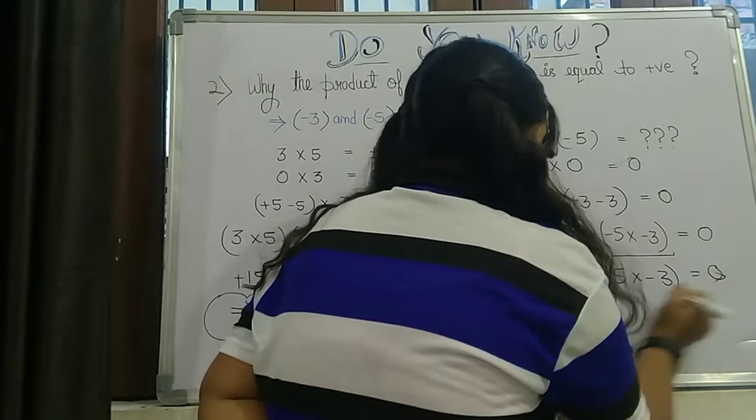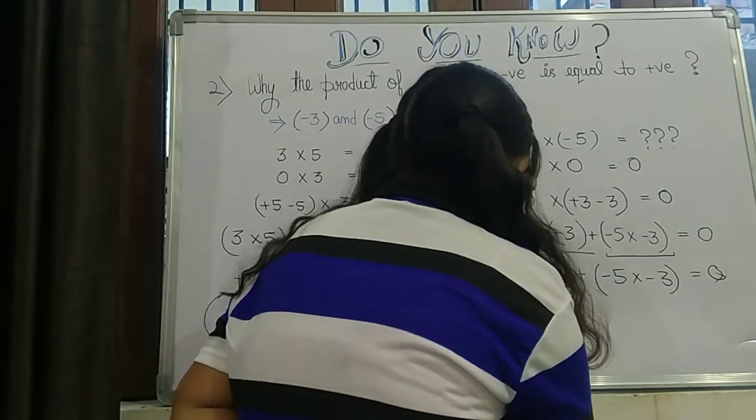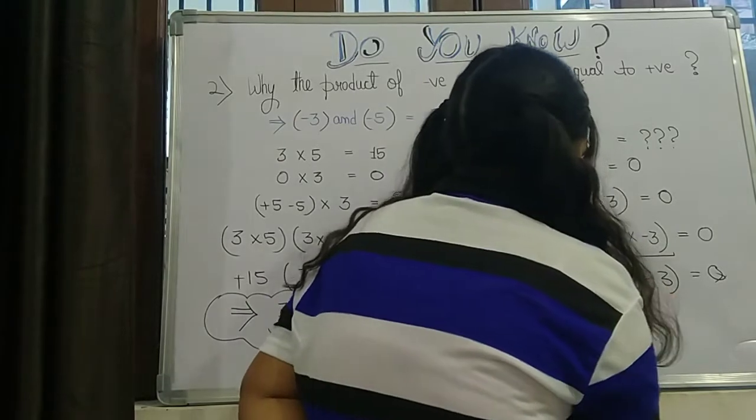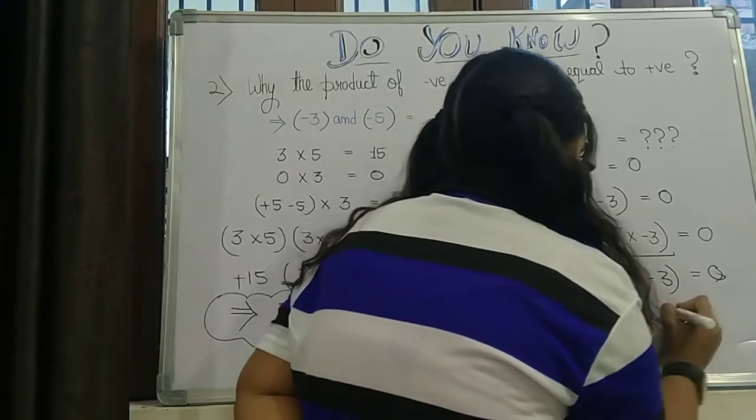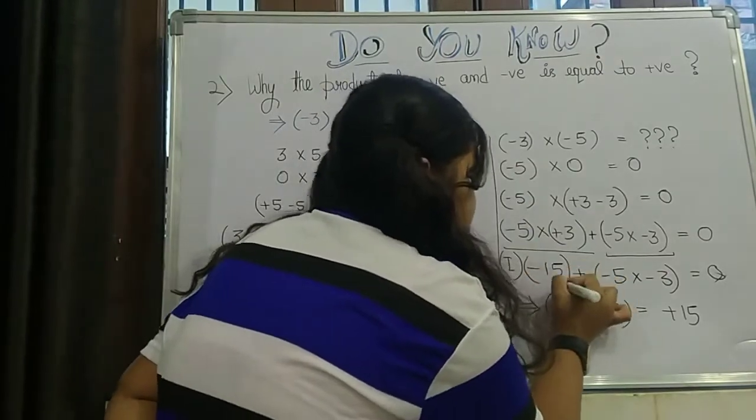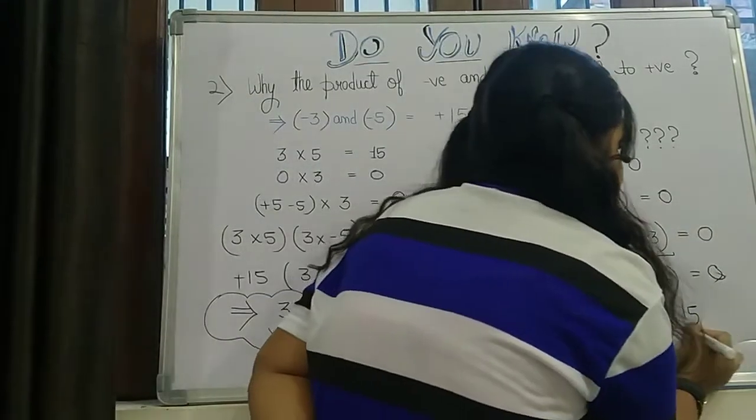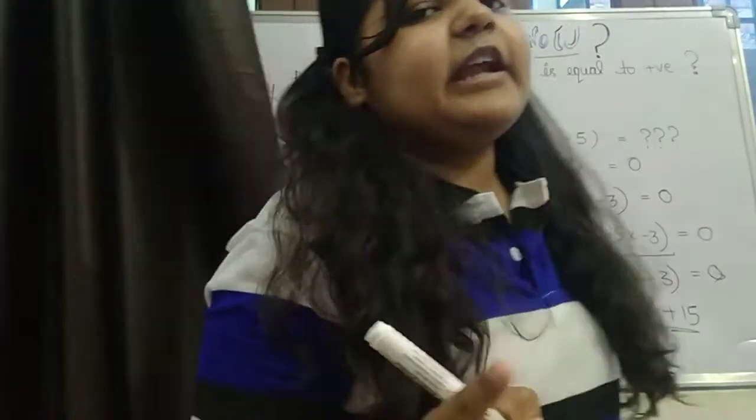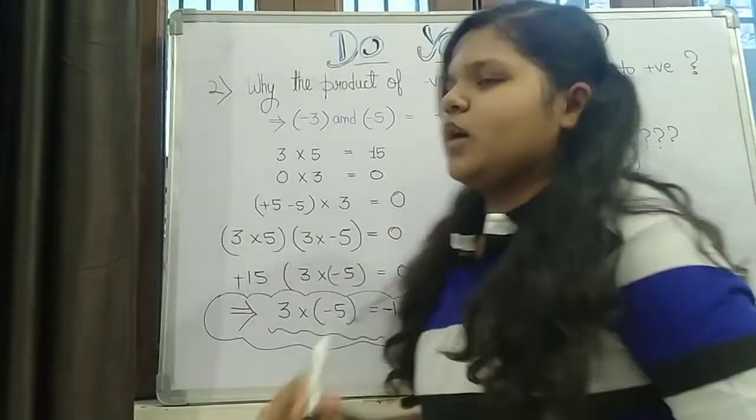So can you see here that we come to the conclusion that minus 5 into minus 3 is equal to positive 15. When this minus 15 goes on the left-hand side, it becomes positive. And hence proved that negative and negative is always equal to positive number.